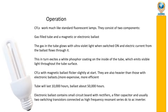CFL works much like a standard fluorescent lamp. It consists of two components: a gas-filled tube and a magnetic or electronic ballast. When switched on, electric current from the ballast flows through the tube, causing the gas to glow with ultraviolet light. This in turn excites the white phosphor coating on the inside of the tube, which emits visible light throughout the tube surface.